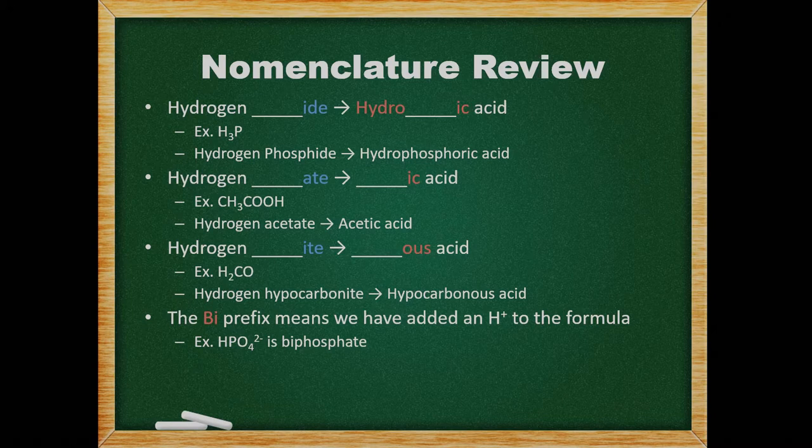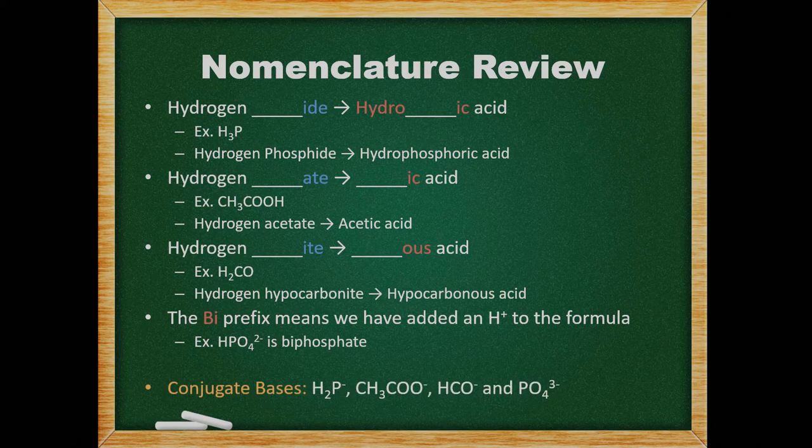Why don't we come up with the conjugate bases for all these acids? They would be dihydrogen phosphide, acetate, bihypocarbonate, and phosphate.